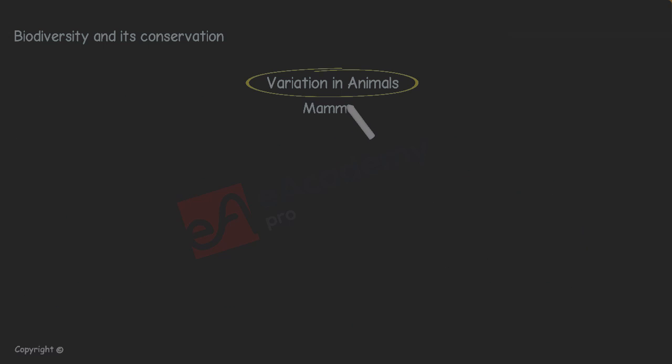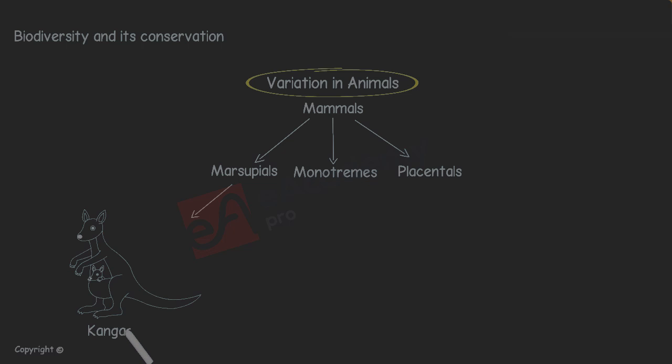More about mammals. Mammals are classified into three subgroups. Marsupials give birth to tiny underdeveloped young that develop in a pouch outside the mother's body. Example, Kangaroo.